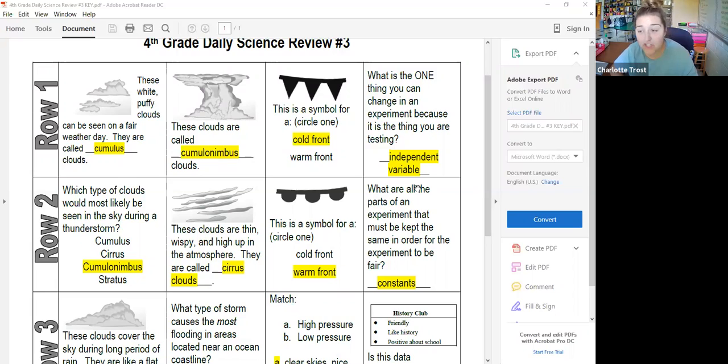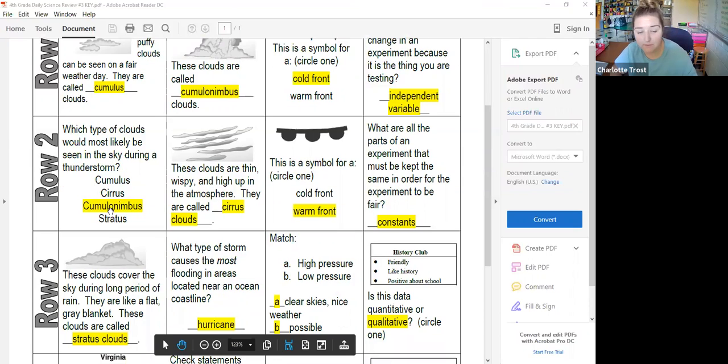And the one thing that you're changing, that you're testing in your experiment, that would be the independent variable. What am I going to see during a storm? I'm going to see cumulonimbus clouds.